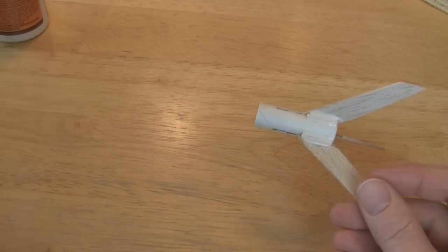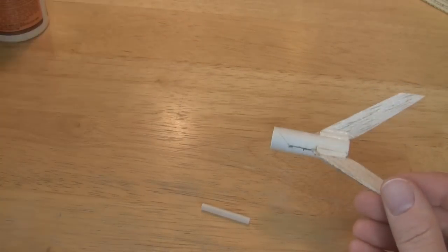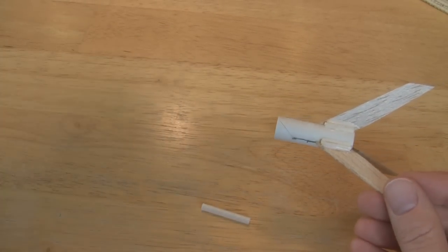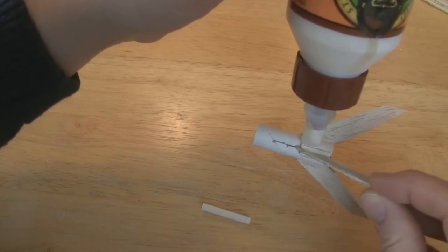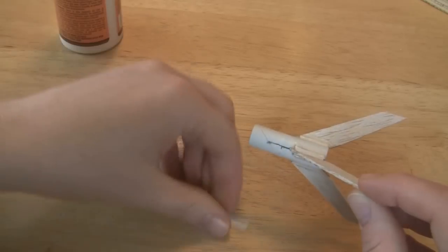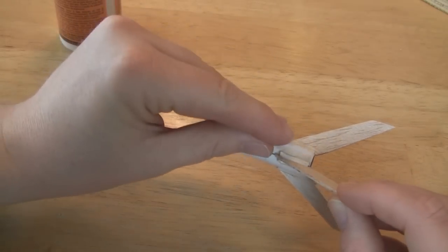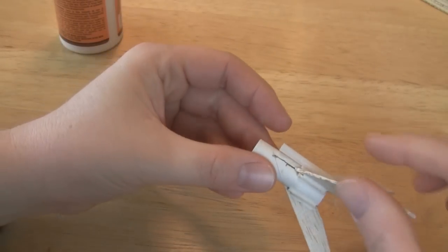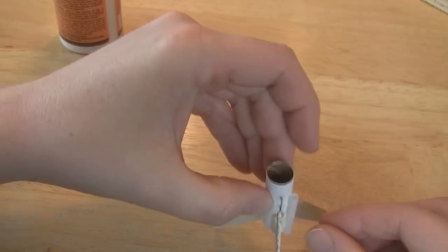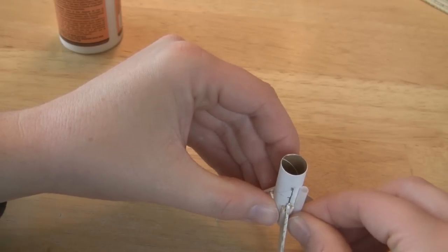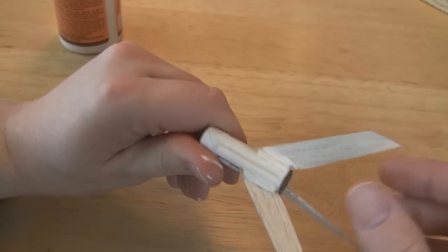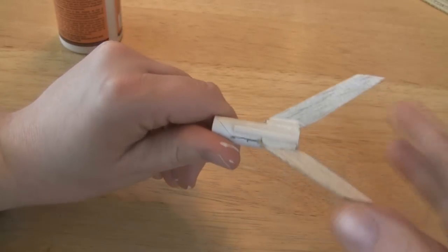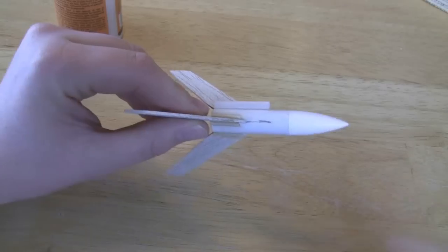And then I guess the other thing I want to do right now is attach the launch lug. So the launch lug will go on with a little bit more glue. I'll put a little bit more glue on afterwards to make sure that the launch lug is securely in place. I want to get the launch lug lined up so it's on the same axis as the body tube.